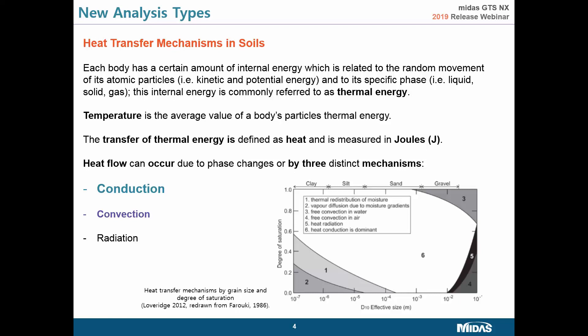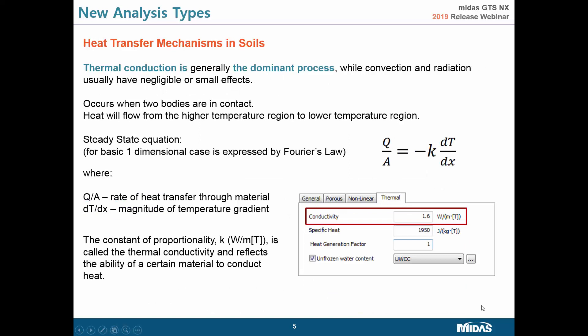Heat flow can generally occur due to phase changes in a solid body or by three distinct mechanisms: conduction, convection, and radiation. Because we are talking about thermal energy transfer in soils, you can see from the reference picture which mechanism is dominant. Heat conduction is the dominant process for heat transfer in soils, while convection and radiation usually have negligible or small effects.